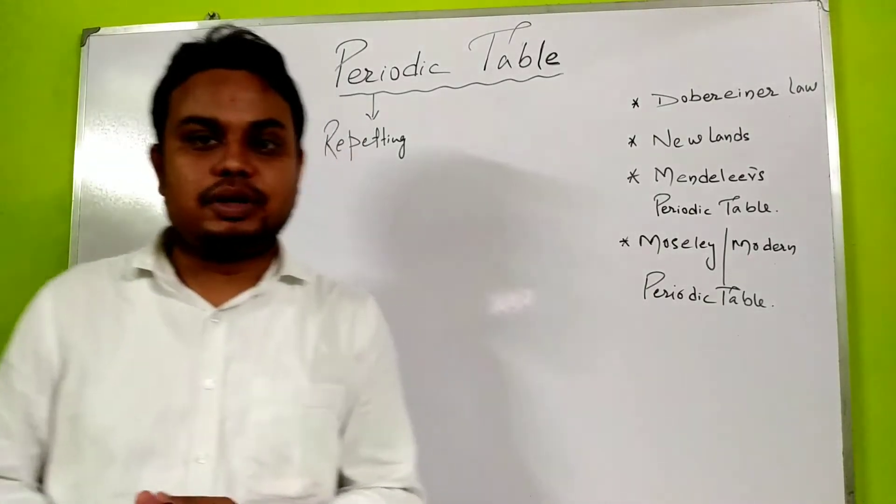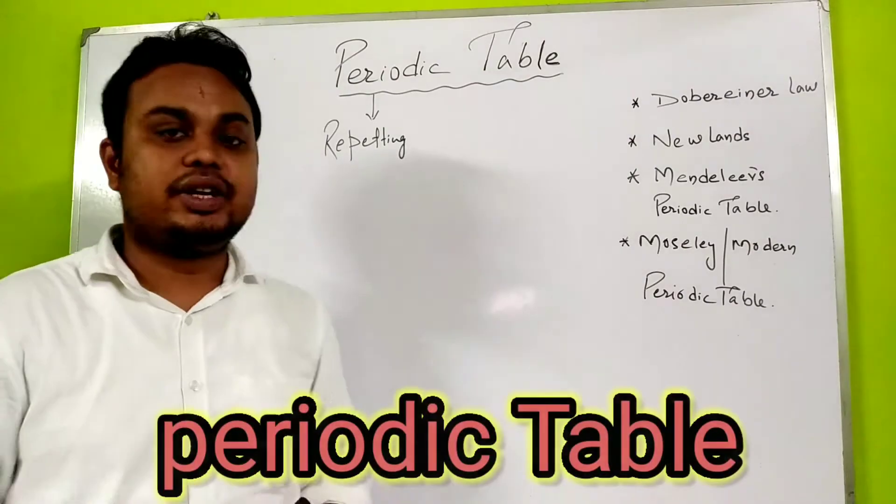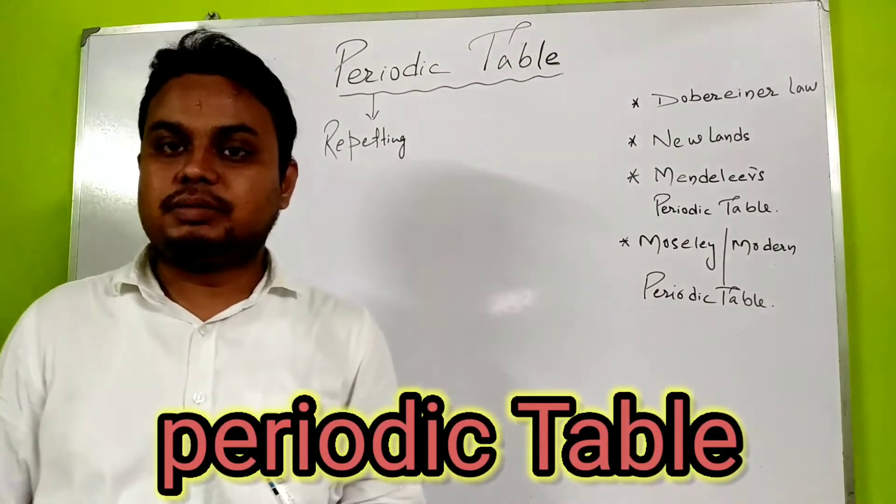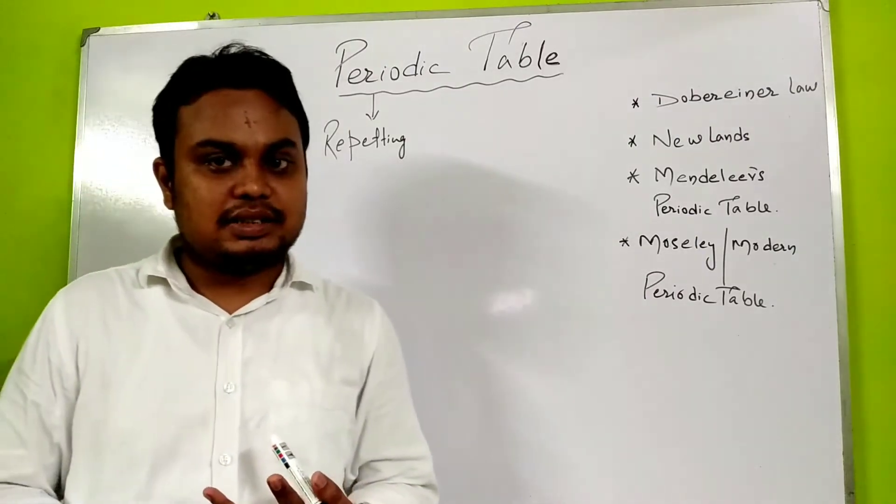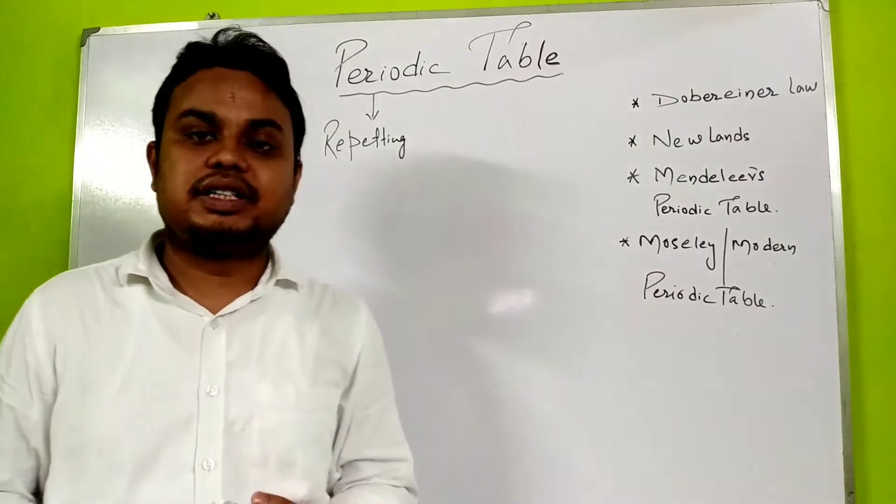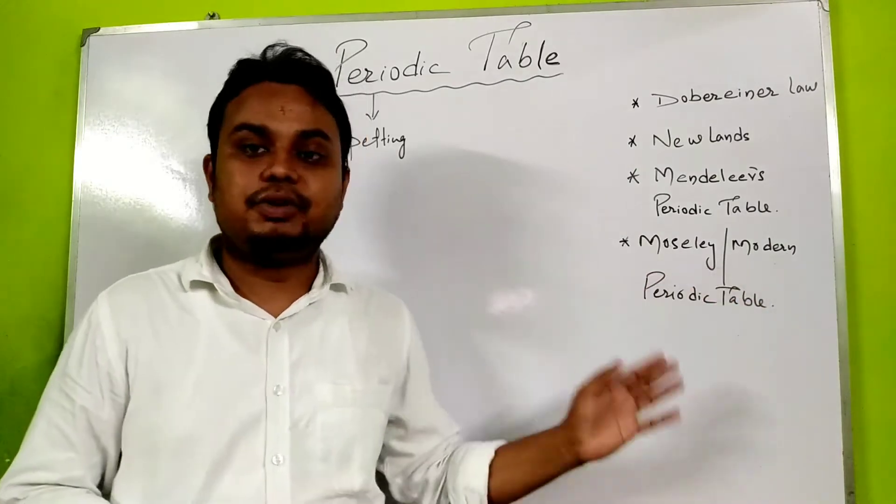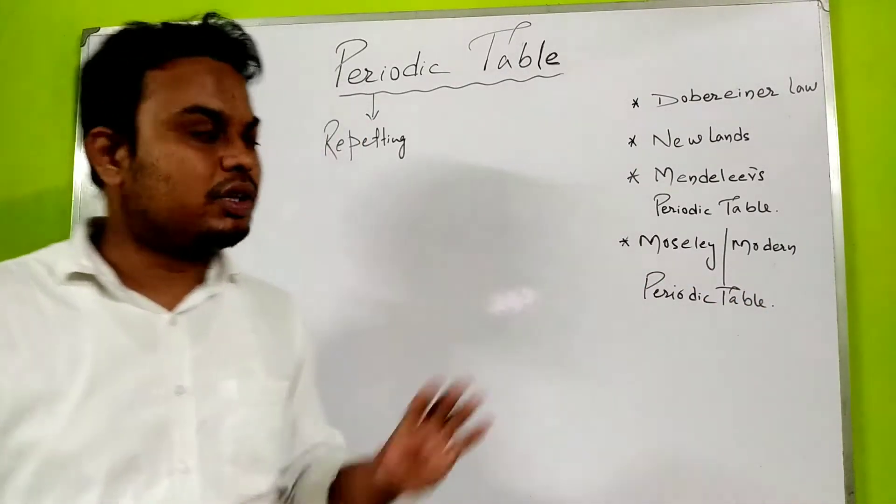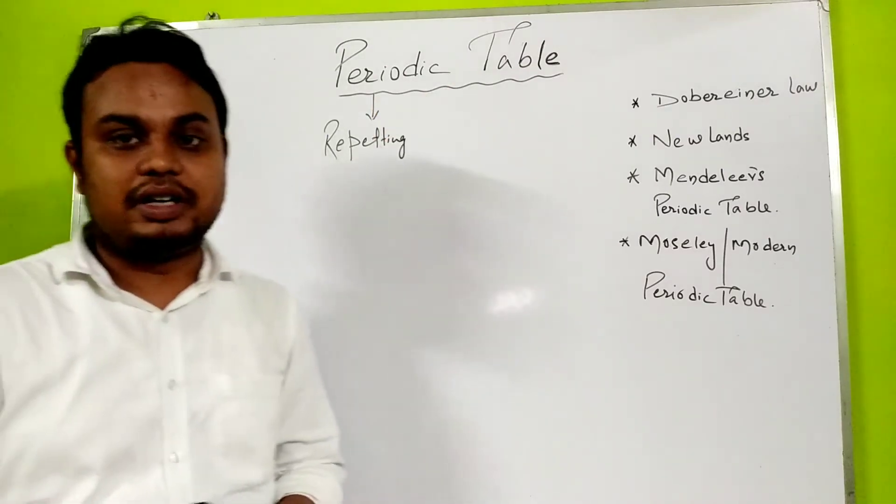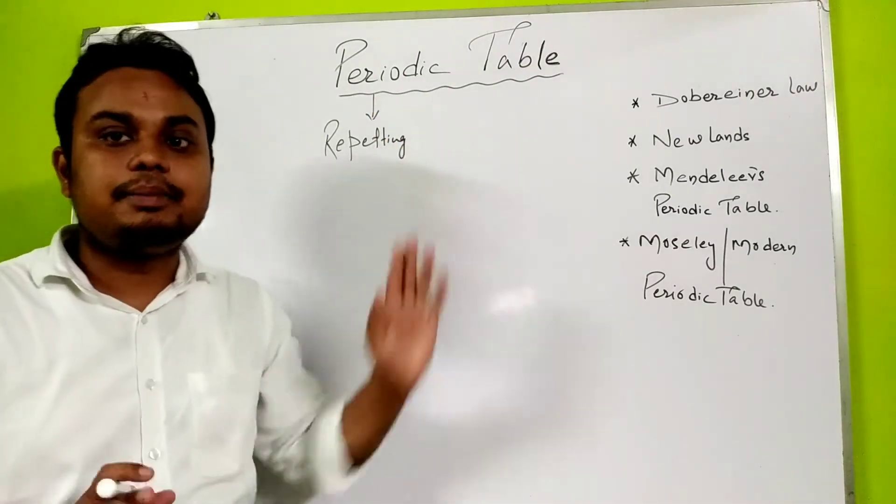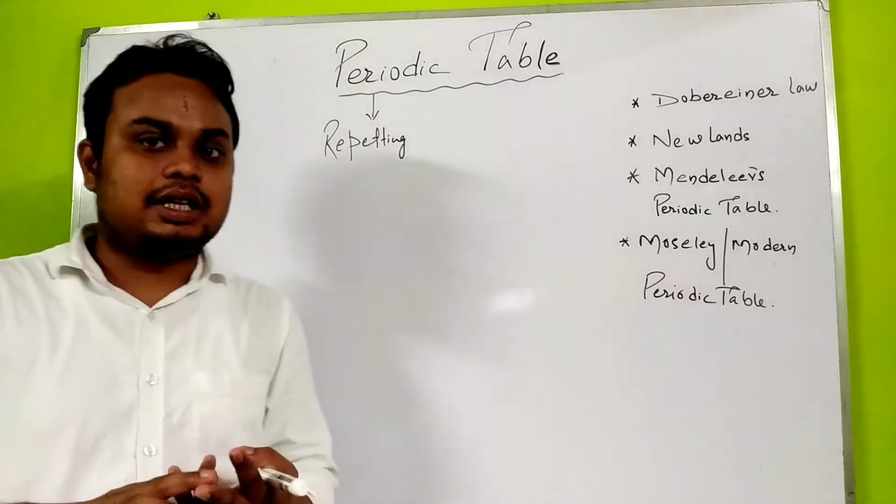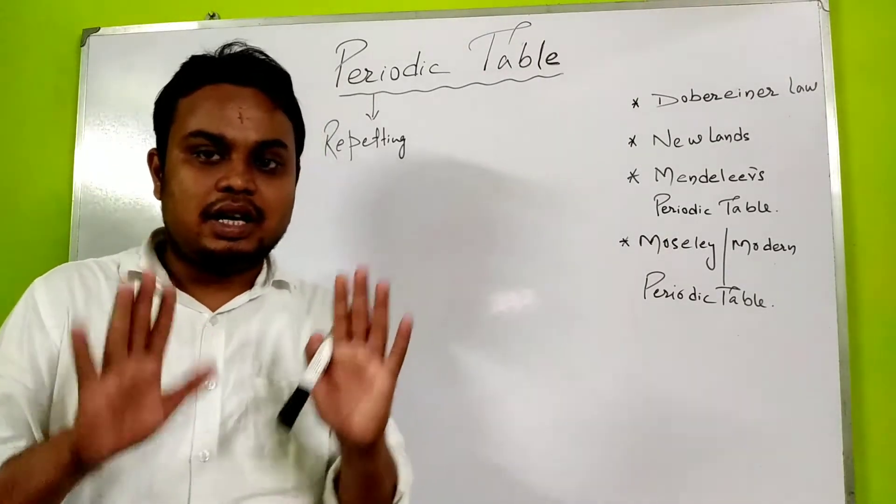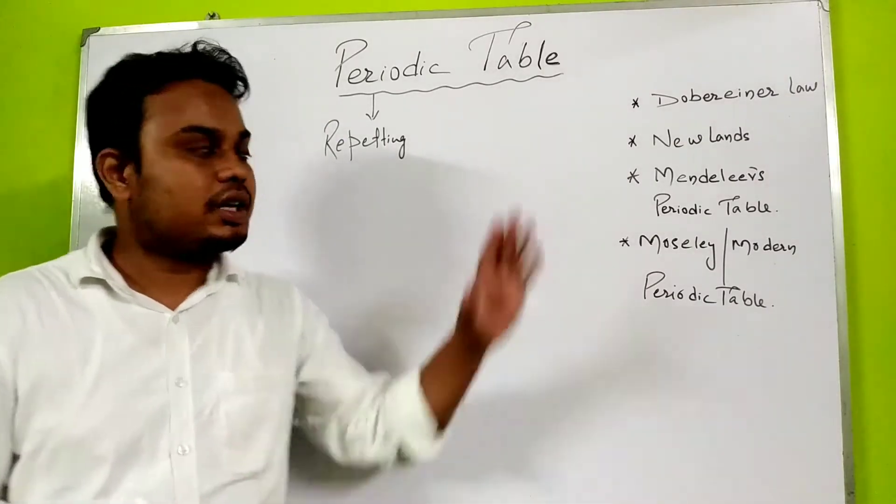Hello everyone, today we are going to start a new chapter on the periodic table. In today's video we are going to look at Döbereiner's Law, Newlands' concept, Mendeleev's periodic table, and then Moseley and the modern periodic table. First of all, periodic means repetition. This means the chemical properties of elements repeat after an interval of time.